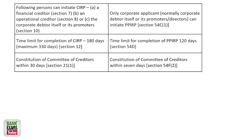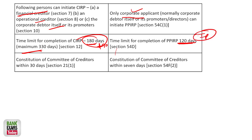Regarding who can initiate CIRP: a financial creditor, an operational creditor, or the corporate debtor itself or its promoter can initiate CIRP. For PPIRP, only the corporate applicant themselves can initiate the process. The maximum time limit for CIRP is 180 days, extendable by 90 days, with the total process to be completed within 330 days. The time limit for PPIRP completion is 120 days. The committee of creditors must be constituted within 30 days in CIRP and within 7 days in PPIRP.